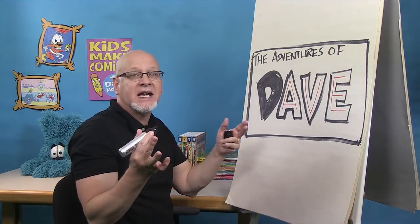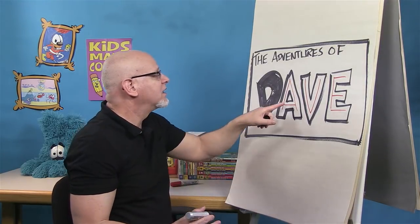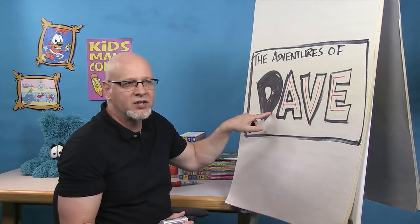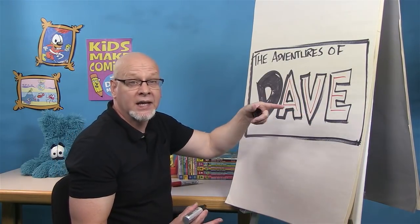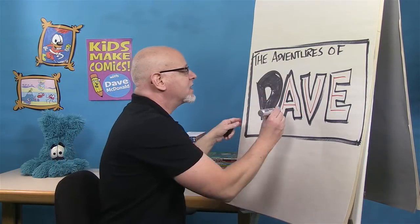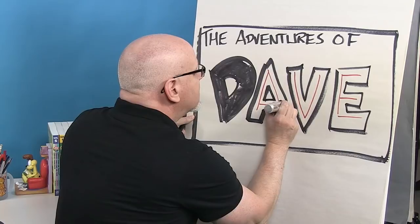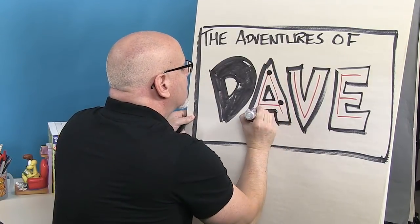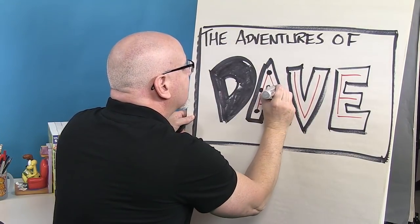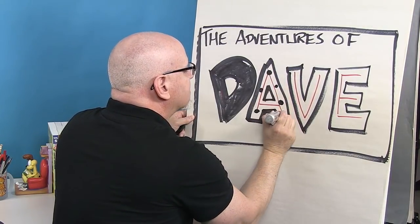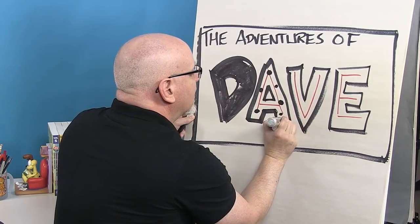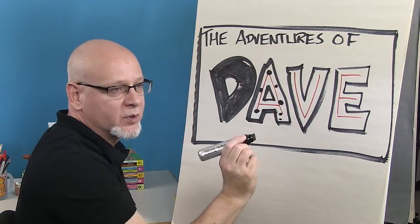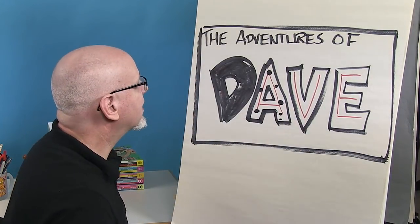Stylizing — it's like decorating. So let's say, for example, Dave the character was a ladybug. You could stylize the letters — you could color it in red and make some black ladybug dots. If it were a zebra, you could create zebra stripes in your letters.